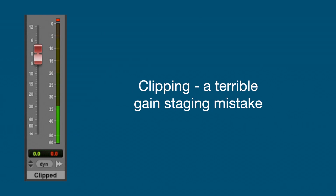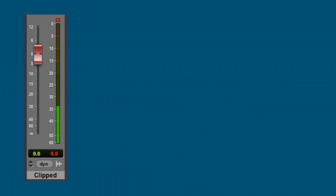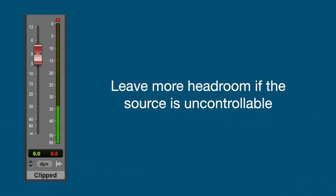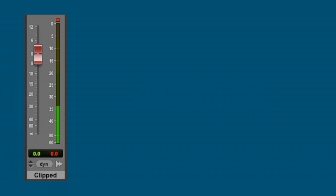So now we know what's wrong with clipping and why it's good to leave headroom. To say it once again: bobbing up and down round about minus 18, peaking round about minus 10 — that's a good level that always works. There are situations where you would leave more headroom, but that's when you've got a really uncontrollable signal and you've got no idea how it's going to peak, so in that case you might set your peak level round about minus 20, just in case.